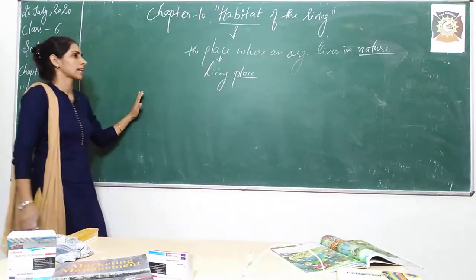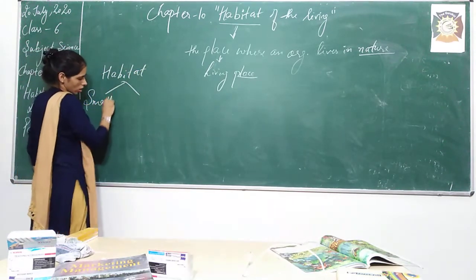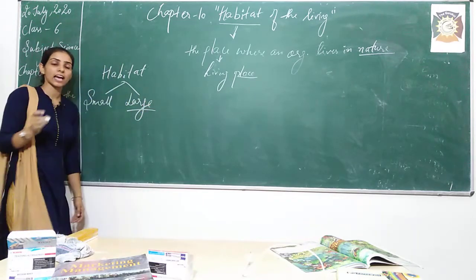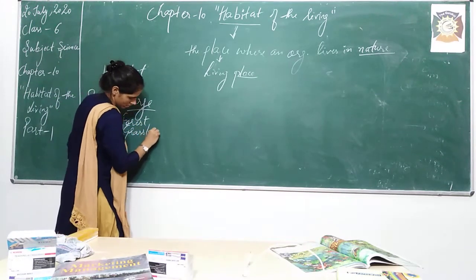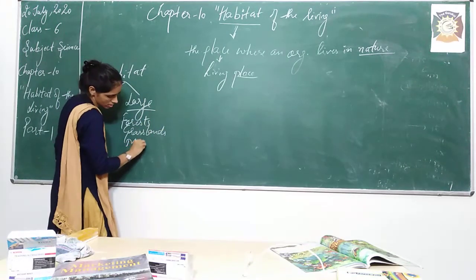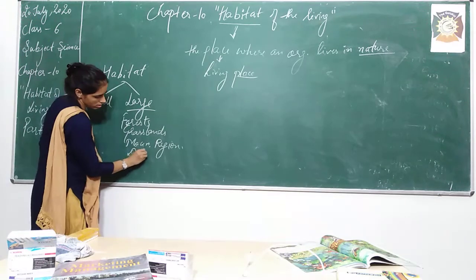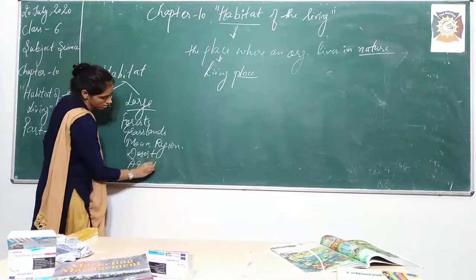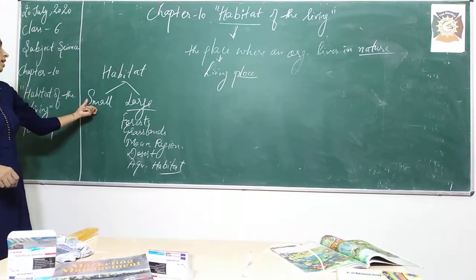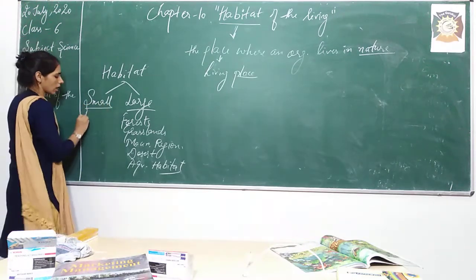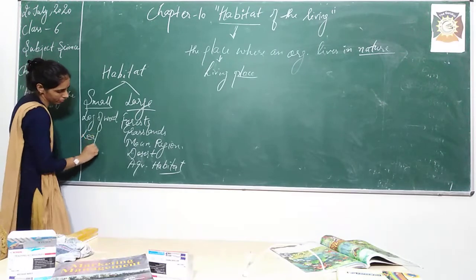So from that we see here that habitat can be small or it can be large. It can be as large as a forest, grassland, mountain, beaches, deserts, or aquatic habitats. But in the same manner it can be as small as a log of wood or leaf litter.